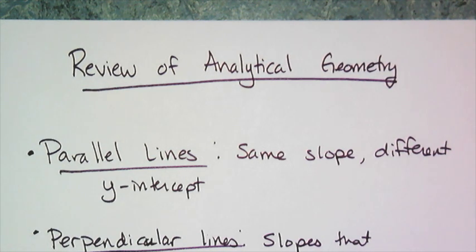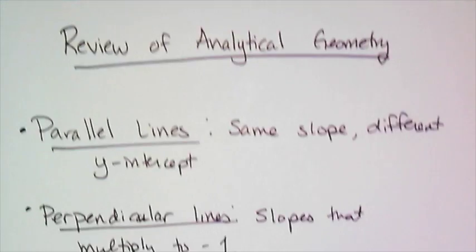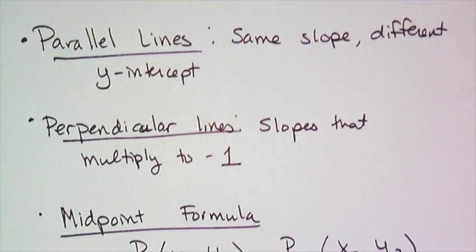First, remember that parallel lines have the same slope and different y-intercepts, and that perpendicular lines have slopes that multiply to negative 1, which means they're opposite and reciprocal.